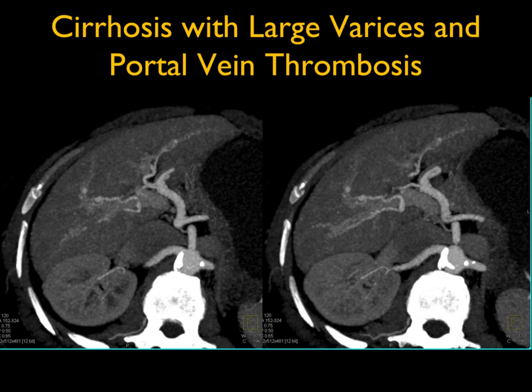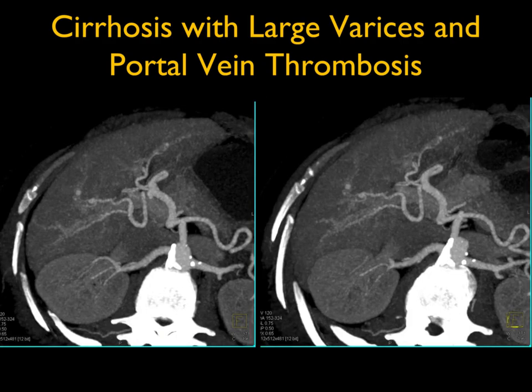Case seven: cirrhosis with large varices and portal vein thrombosis. In patients with cirrhosis you can see small micro-aneurysms off the hepatic artery and the liver texture is irregular. On arterial phase MIP imaging you won't see portal vein thrombosis or venous changes well. On venous phase imaging you see splenorenal shunting, assess the portal vein patency, the SMV, and note a gallstone.